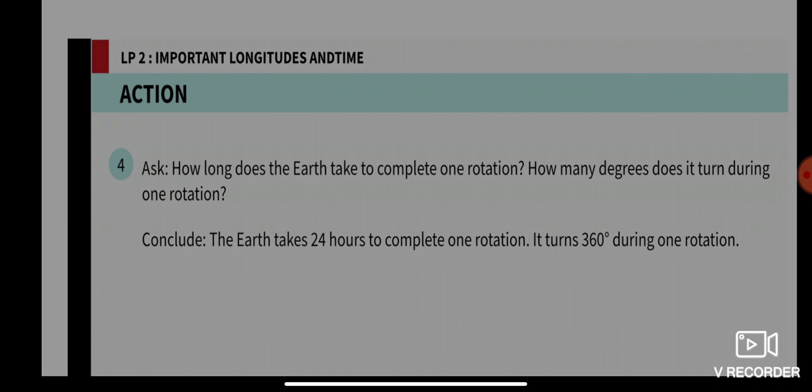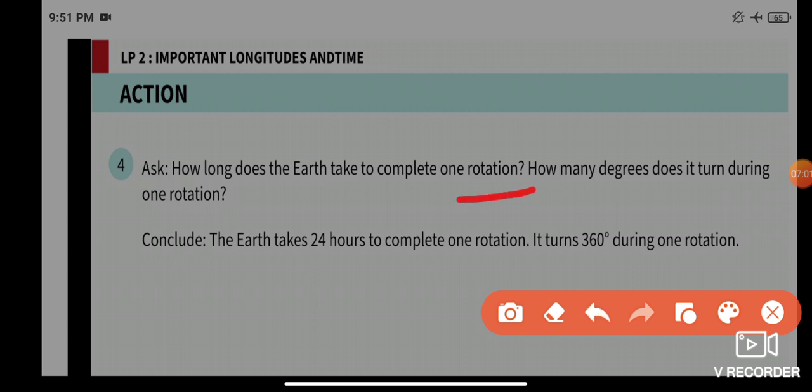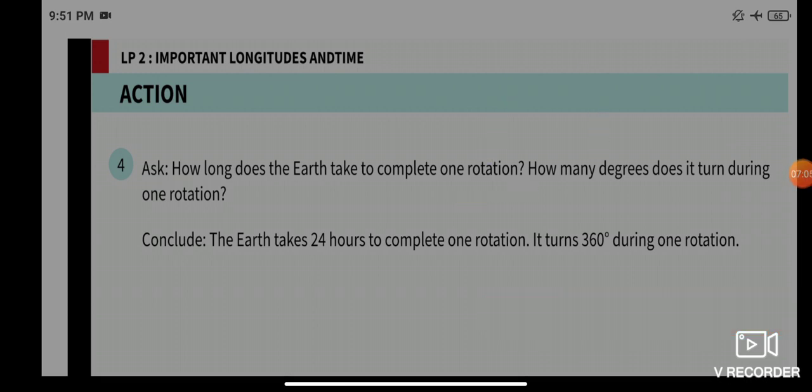The Earth takes 24 hours to complete one rotation, making one day. When it comes to revolution, it takes 365 days — or 366 days in a leap year — to complete one revolution. Don't confuse rotation and revolution: rotation means one day, revolution means one year.